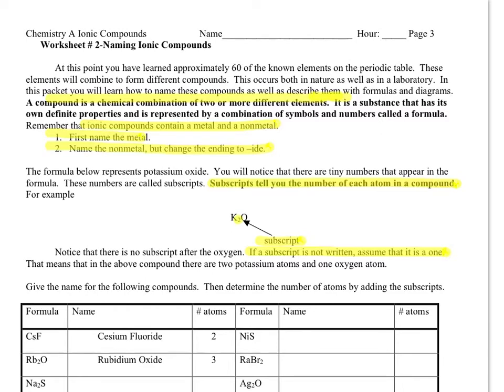covalent compounds, where we have two nonmetals. It's important in being able to talk about these things that we have names for our ionic compounds. We know what we call all of our individual atoms—their names are on the periodic table—but once they combine, we have to have a different name.